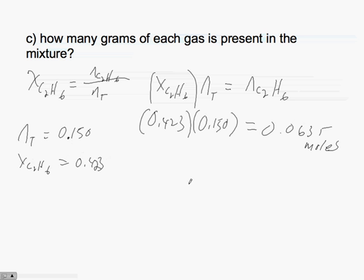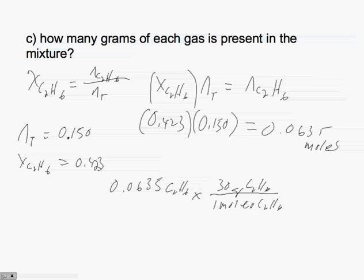If we know the moles of this, then we can convert the moles of ethane into grams of ethane, which would be 0.0635 C2H6. In order to get the number of grams, we know that for every one mole of this material, we have 30 grams of C2H6. C2H6 cancels out, and our answer would be in grams, which would be 1.91 grams of C2H6. So that's how we would get the number of grams of C2H6.